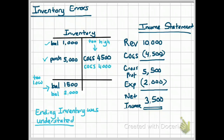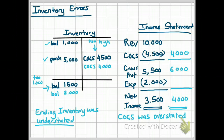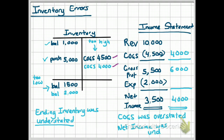Looking at the income statement, cost of goods sold was $4,000, which means gross profit would have been $6,000. After subtracting $2,000 of expenses, net income should have been $4,000. So the effect of ending inventory being understated is that your cost of goods sold was overstated by $500 — the amount of the error. Your gross profit and net income were understated by $500, also by the amount of the error.